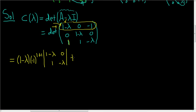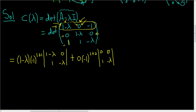Next we go to the second entry, which is 0. It doesn't matter what the cofactor is, because 0 times anything is 0. The corresponding submatrix from crossing out row 1 and column 2 is: 0, 1, 0, −λ.